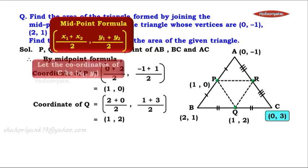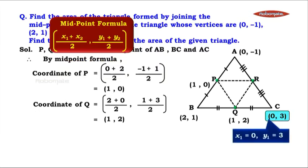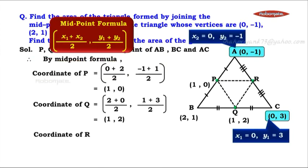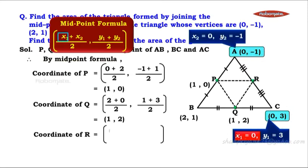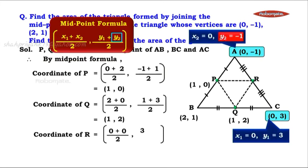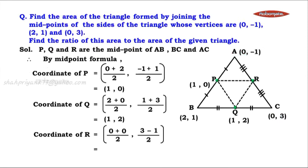Third, for point R: point C is x1, y1 and point A is x2, y2. Therefore, by midpoint formula, R = (0 + 0)/2, (3 + (-1))/2. That gives us 0/2 = 0, and (3 - 1)/2 = 1. So the coordinates of point R are (0, 1).